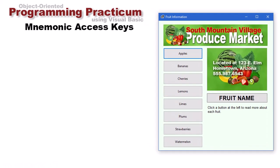I have mnemonics set up on this application. Look very closely at the buttons when I press the alt key — you'll see there's a little underscore underneath some of the letters. I have an underscore under A for apples, B for bananas, C for cherries, E for lemons, L for limes, P for plums, S for strawberries, and W for watermelon.